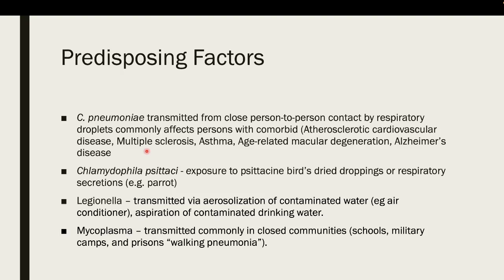For predisposing factors, transmission is often due to close contact, inadequate hand hygiene, or no mask protection. Chlamydia pneumoniae is transmitted from close person-to-person contact by respiratory droplets, and commonly affects persons with comorbid conditions such as arteriosclerotic cardiovascular disease, multiple sclerosis, asthma, age-related macular degeneration, and Alzheimer's disease.